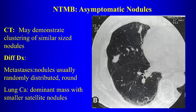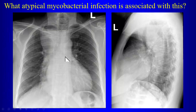Atypical mycobacteria can also give you multiple asymptomatic nodules — very commonly mistaken for cancer or metastatic disease, and can give false positive PET scan findings. Sometimes the nodule is resected and comes back as atypical mycobacterial disease rather than cancer. Asymptomatic nodules are another pattern seen with atypical mycobacterial infections, often with somewhat irregular rather than well-defined rounded borders.